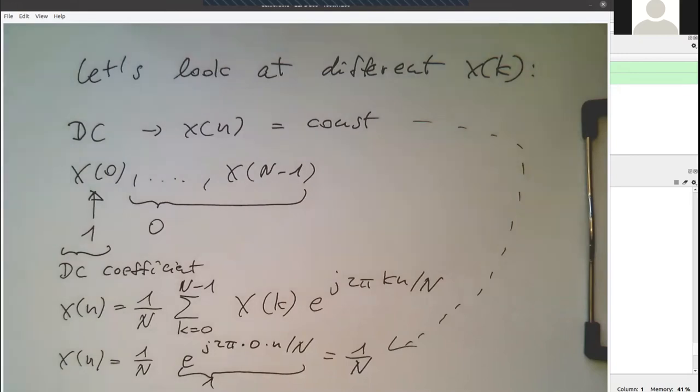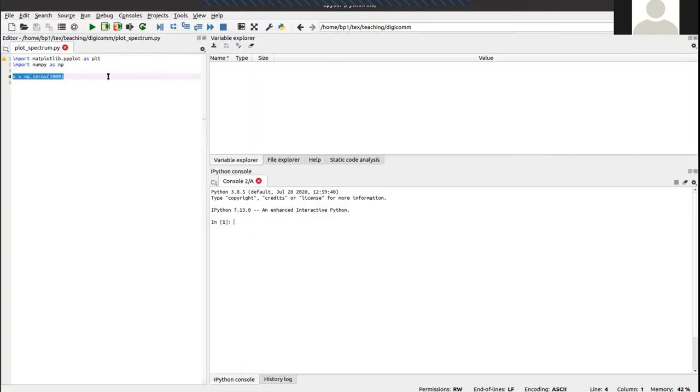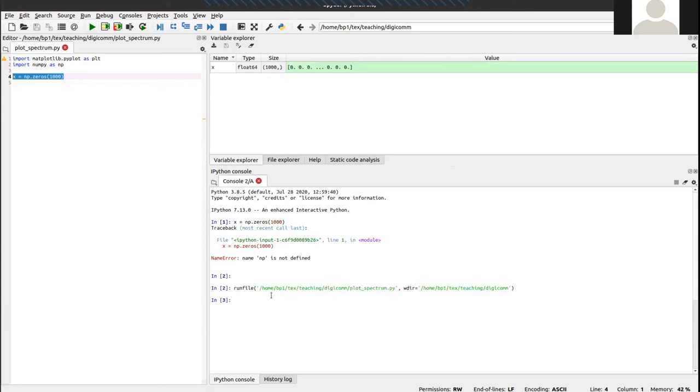So is that actually the case? So if we go here to Spyder, what I've already prepared here is just for cut and paste purposes here, let's copy this here into the Python array of 1,000 zeros here. Need to run this here first.